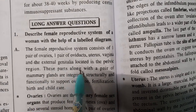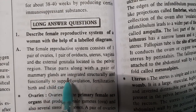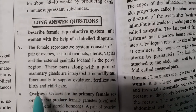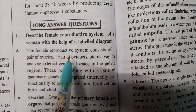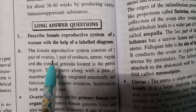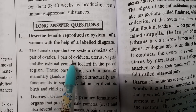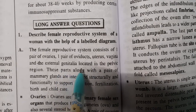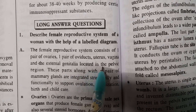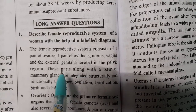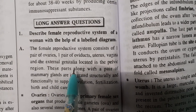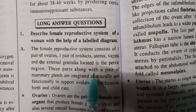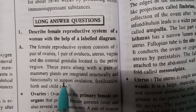These parts, along with a pair of mammary glands, are integrated structurally as well as functionally to support ovulation, fertilization, birth, and child care. The components are: a pair of ovaries, a pair of oviducts, one uterus, single vagina, and external genitalia — all located in the pelvic region.